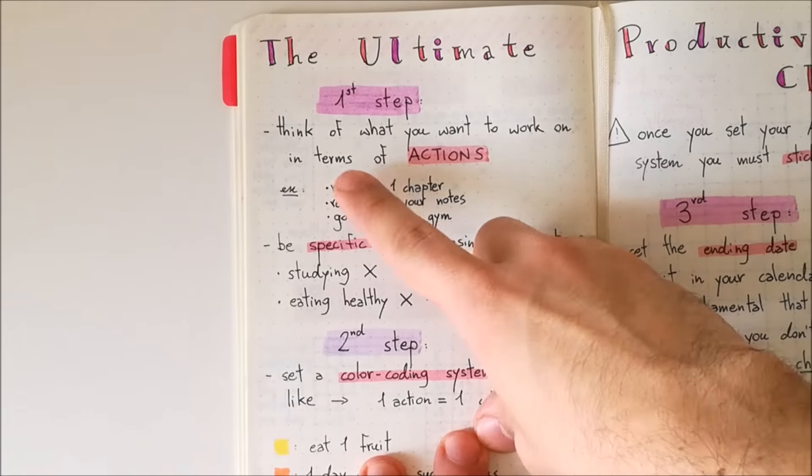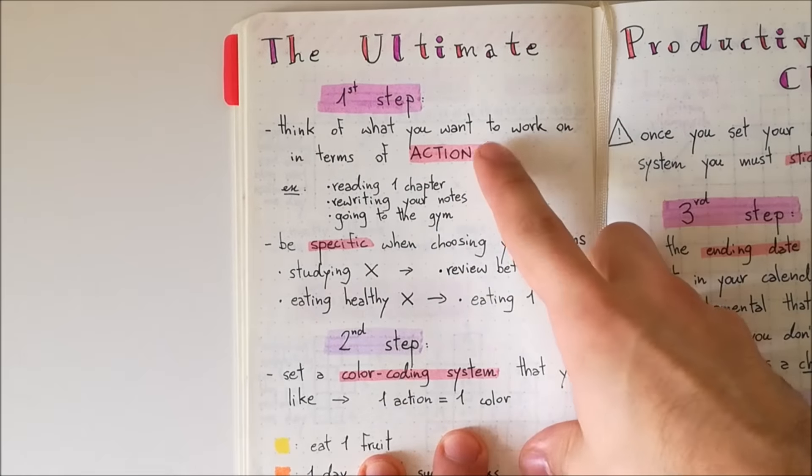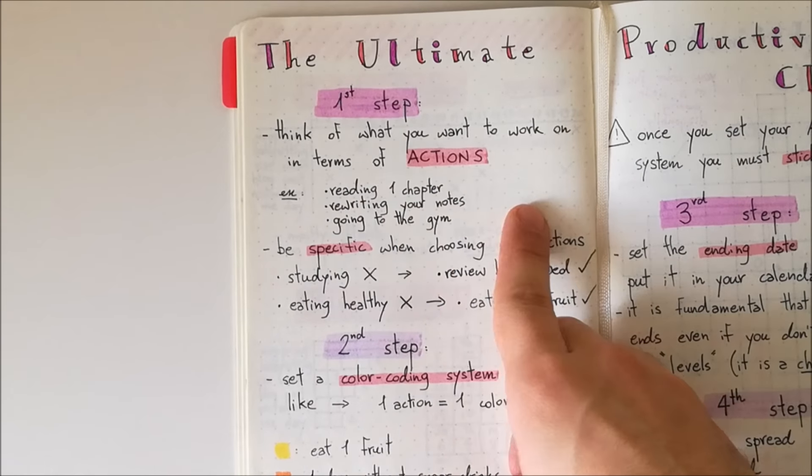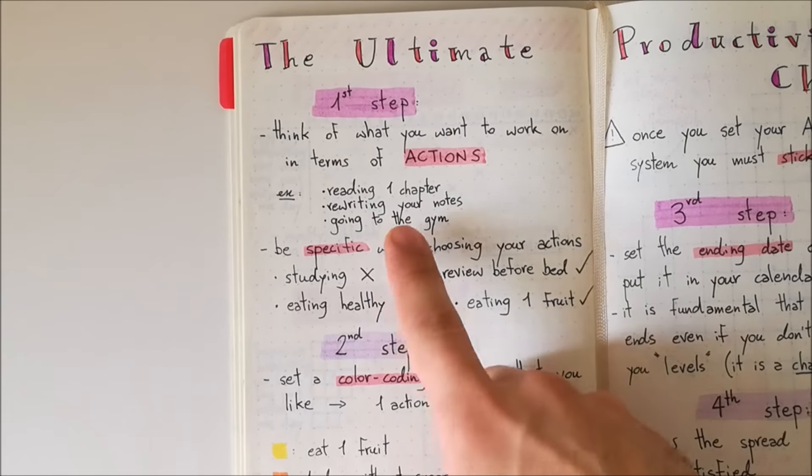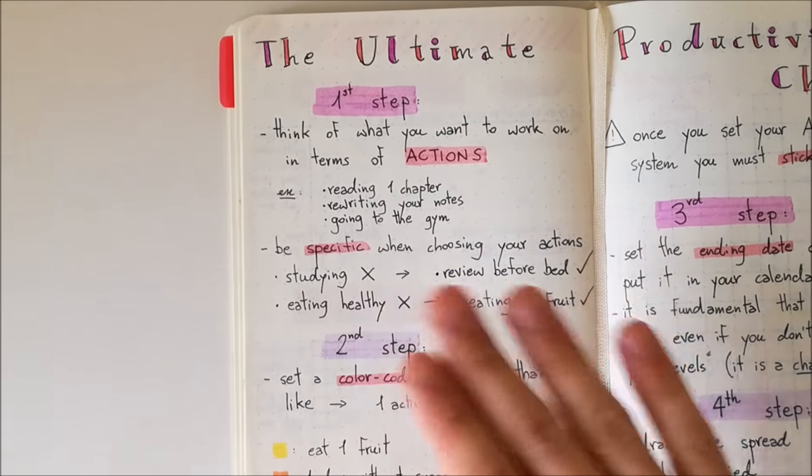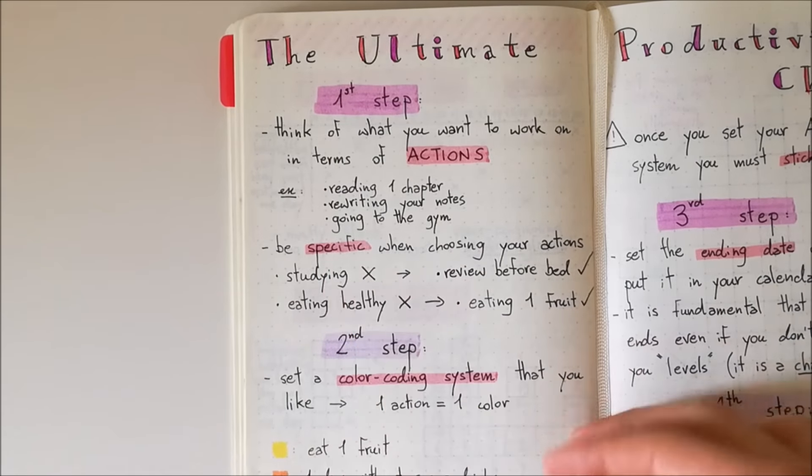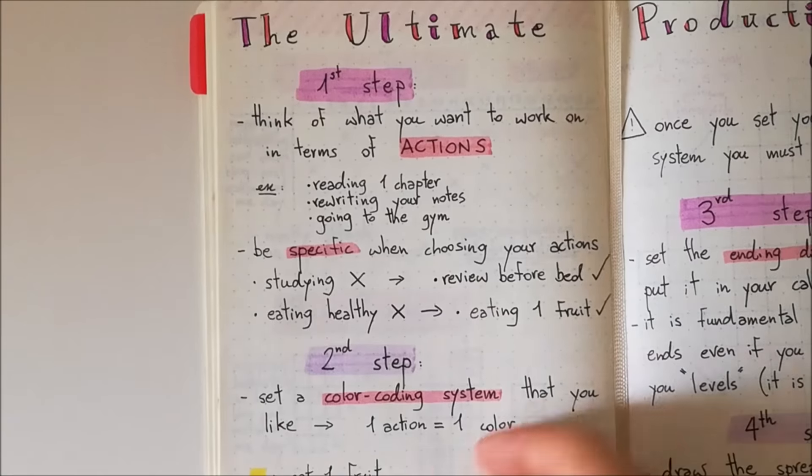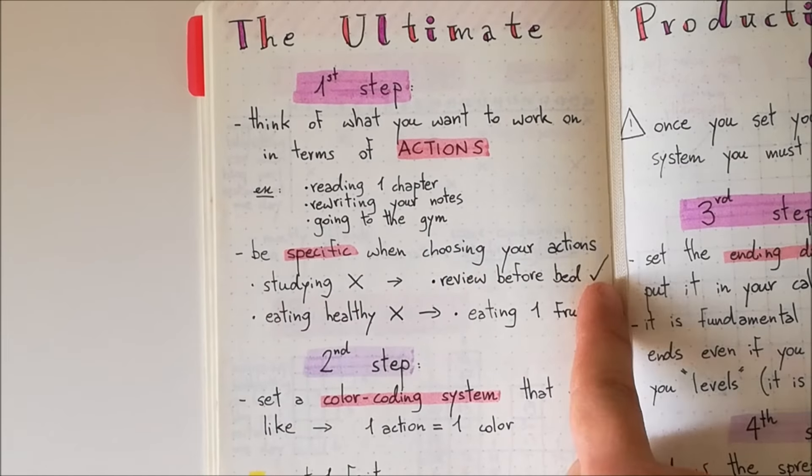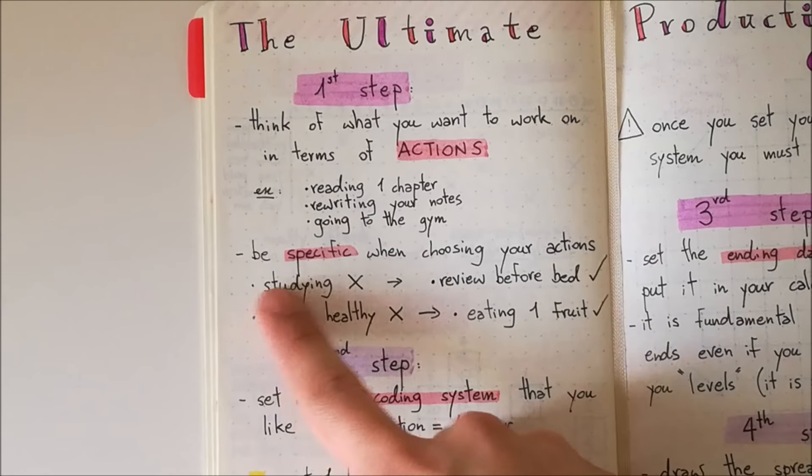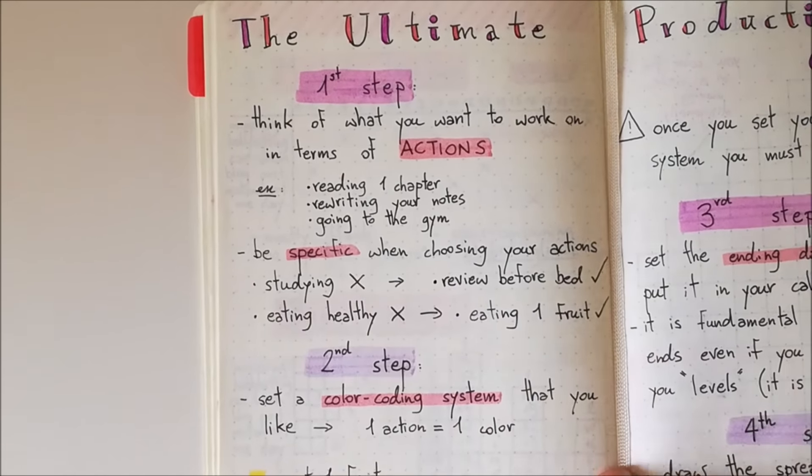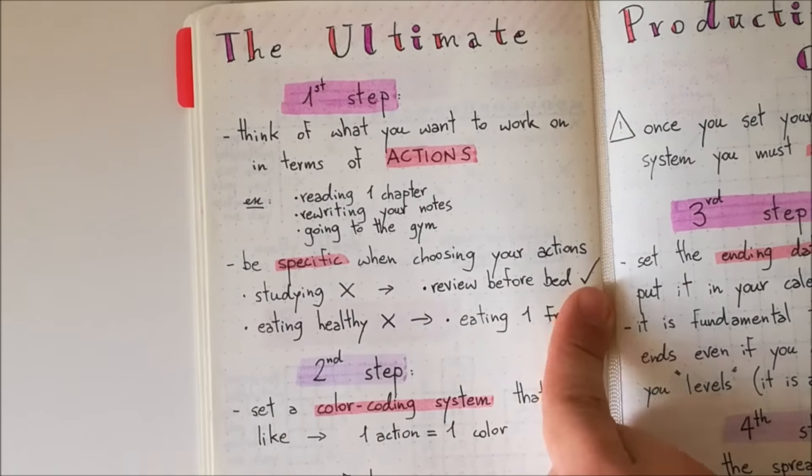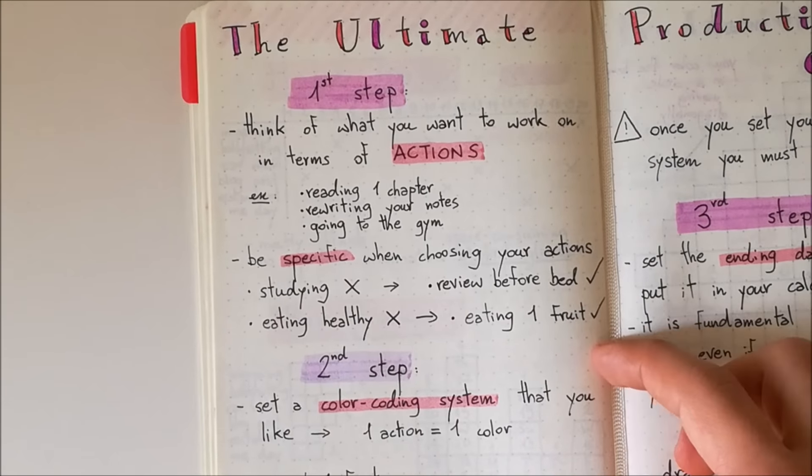Also, it is important to be very specific when choosing your actions. Here you have some examples. For example, you want to focus more on reading. So the action could be reading one chapter at night, for example, or rewriting your notes, going to the gym. Here I wanted to give you two examples of bad actions that do not work well. So for example, studying. Studying is too generic. You want to be very specific. Otherwise, you really won't be able to track how productive you are. That's why you may want to choose reviewing before bed or re-read your notes or something instead of studying. The same goes for eating healthy. Eating healthy is way too blurry. It's not as specific. But you may want to choose an action like eating one fruit or spend one whole day without sugar drinks, for example.